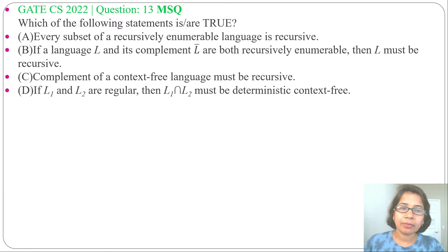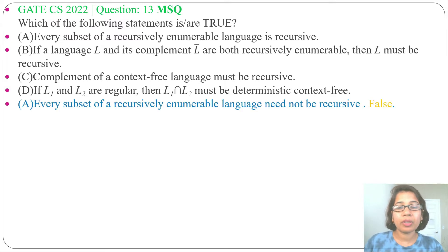First statement: every subset of a recursively enumerable language is recursive. This is incorrect because every subset of a recursively enumerable language may or may not be recursive. As it is written, it claims it should be recursive, which is wrong. This statement is false.